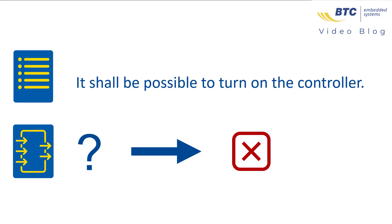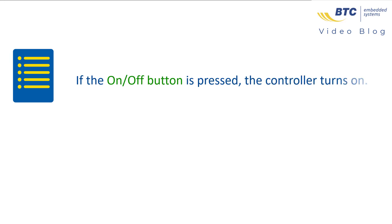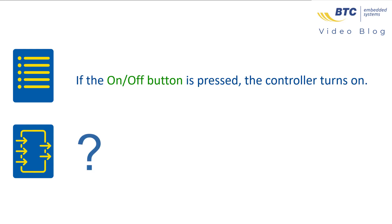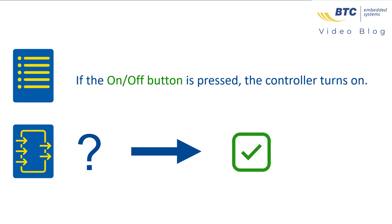A better version of the requirement could be: 'If the on-off button is pressed, the controller turns on.' Now we have the first interface object — a button in this case — for that controller. Additional interface objects will come from other requirements, and of course the same interface object, like the on-off button, usually shows up in several requirements.